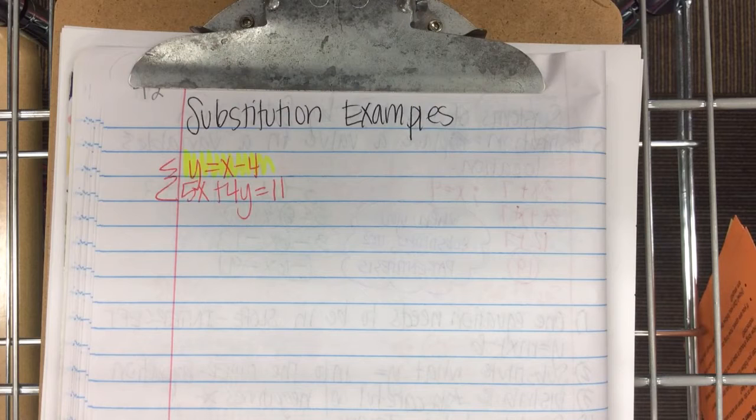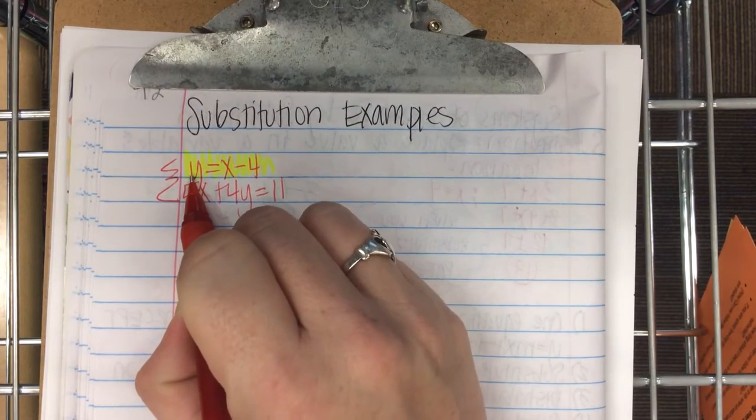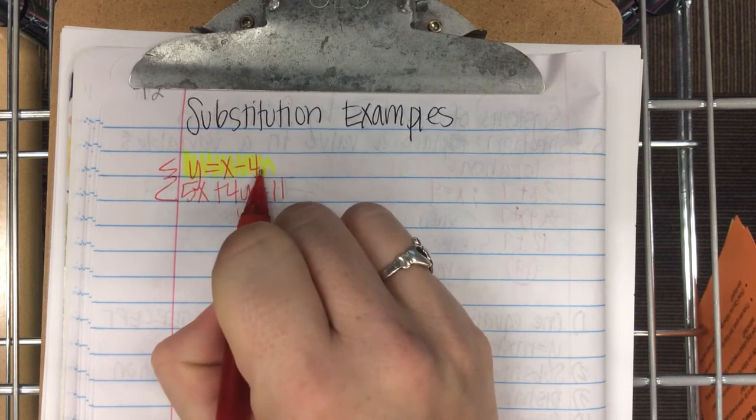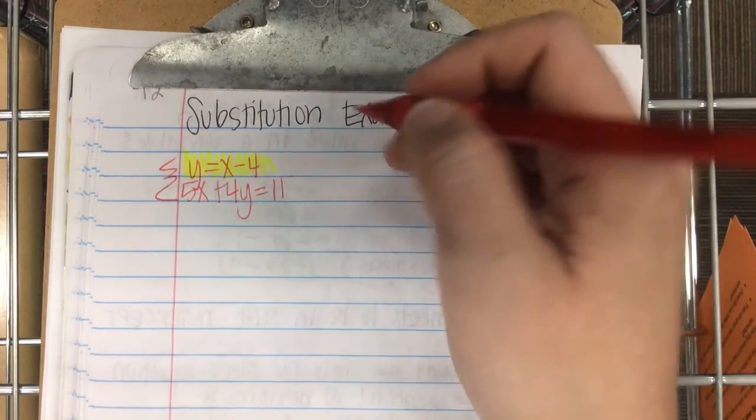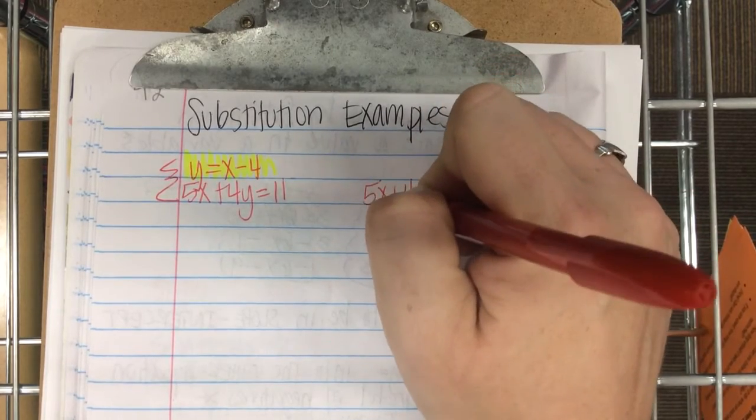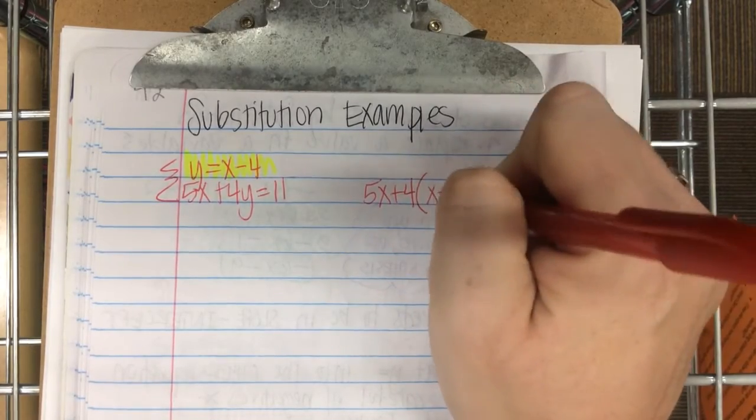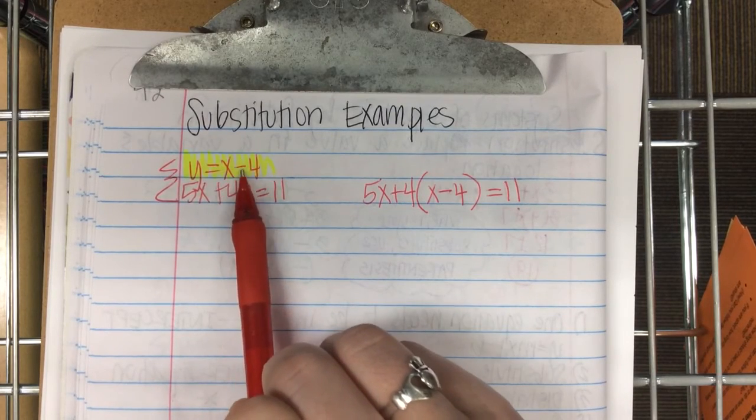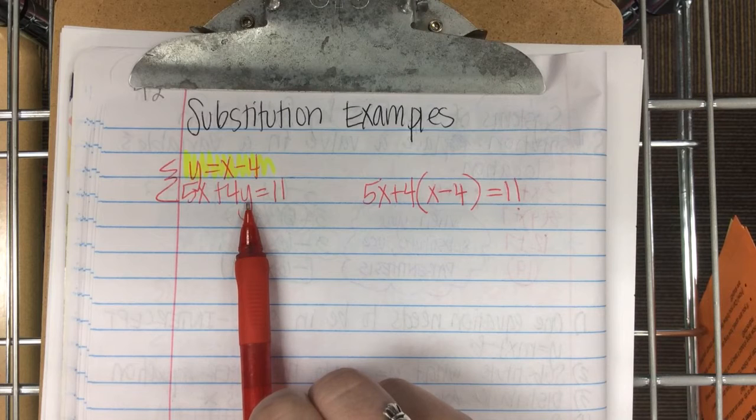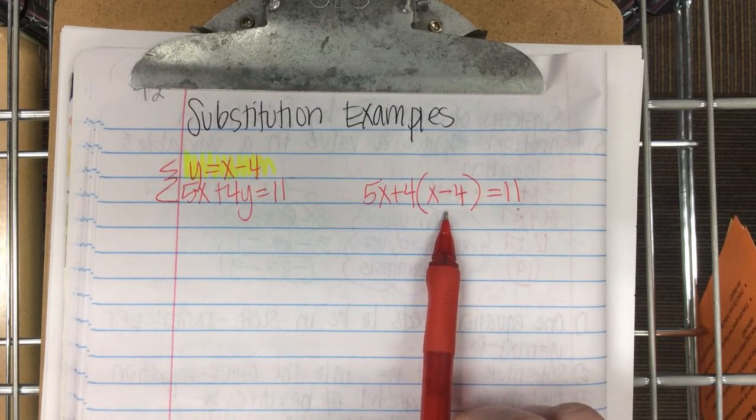Step number two. Substitute what y equals into the other problem. So instead of the variable y, what does y equal? x minus 4. So down in this second problem, instead of the variable y, because that's what y equals, I'm going to substitute x minus 4. So 5x plus 4. And instead of y, I'm putting x minus 4 equals 11. Whatever y equals, that goes into the other problem. Because y equals x minus 4. So down here, y can equal x minus 4.